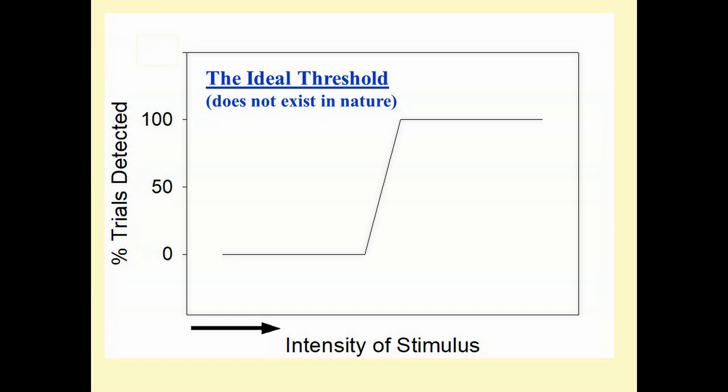Looking at this ideal threshold, when the intensity of the stimulus is zero, meaning there's no sound, the percentage of trials in which it was detected is zero. As you increase the intensity of the sound moving to the right, you're still seeing zero percent detection until suddenly there's 100% detection.